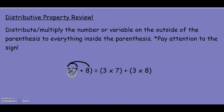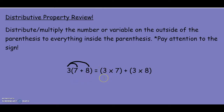For example, the 3 is the number on the outside of the parentheses, so I want to distribute it to everything inside the parentheses. Distribute means to multiply, so you would do 3 times 7. There is a plus sign in the middle, so we keep the plus sign, and we do 3 times 8.